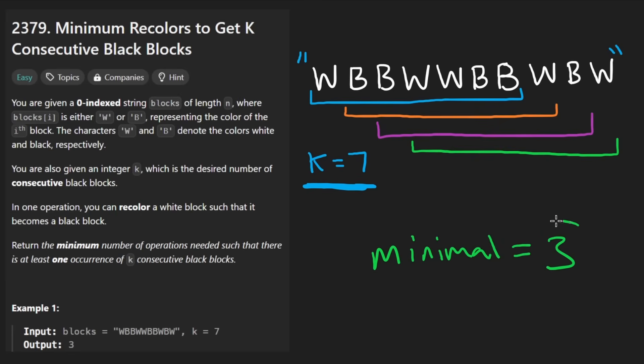So among all of these windows, which one had the minimal amount of recolors? Well, the first three had three and the last one had four, so the minimal one was three, so we return the minimal which is three. If you look at what I just did, this brute force, what would be the time complexity of it?